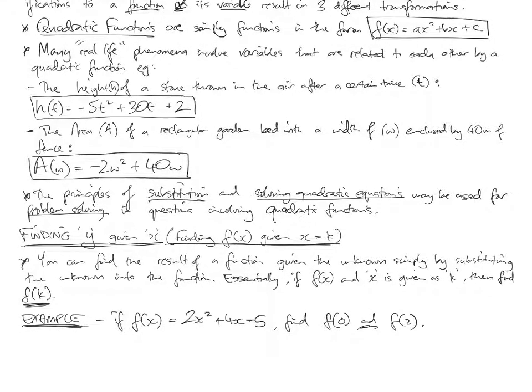Also here, the area a of a rectangular garden bed that's got a width of w, so that can change, but the only thing that doesn't change is that must use 40 meters of fence. So the area, given a certain width, is going to be negative 2 times by the width squared plus 40 times by the width. So that's another example of a real-life phenomena that may use a quadratic function to relate variables.